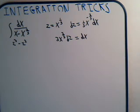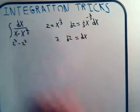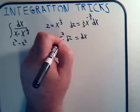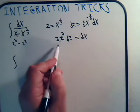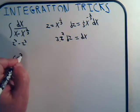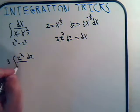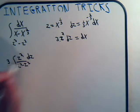But x to the two-thirds, that's z squared. So this is 3 times z squared. So now our integral is 3z squared dz divided by z cubed minus z squared.